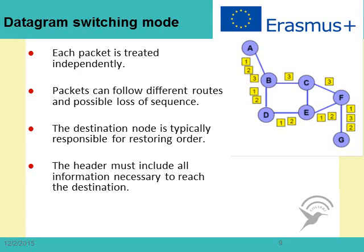There are two types of working modes in packet switching networks. The first is datagram switching mode, also known as connectionless mode, where each packet is treated independently. Packets can follow different routes, and loss of sequence can happen. The destination node is typically responsible for restoring order, and the header must include all information necessary to reach the destination.